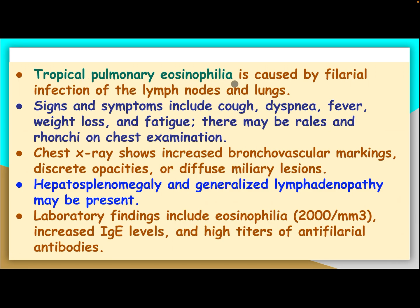Tropical pulmonary eosinophilia is caused by filarial infection of the lymph nodes and lung. Signs and symptoms include cough, dyspnea, fever, weight loss, and fatigue. There may be rales and rhonchi on chest examination. Chest x-rays show increased bronchovascular markings, discrete opacities, or diffuse miliary lesions. Hepatosplenomegaly and generalized lymphadenopathy may be present. Laboratory findings include eosinophilia more than 2000, increased IgE level, and high titer of antifilarial antibody.